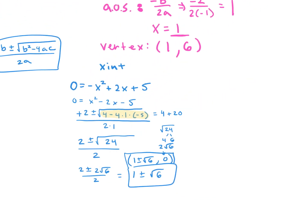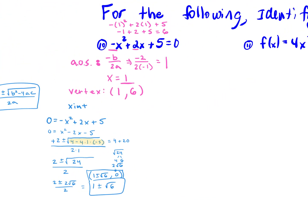Our x-intercept is 1 plus or minus square root 6. You may see it listed like this or written as a point: 1 plus or minus square root 6, comma 0. For the y-intercept, just look at our equation — whatever the constant is, that's our y-intercept. So our y-intercept is 5, or as a point, 0 comma 5.